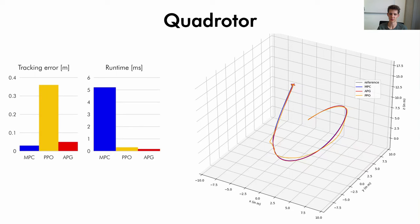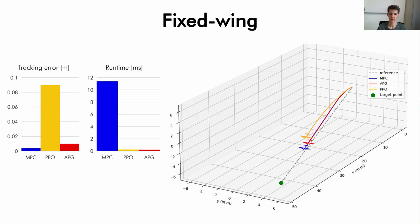We see a similar pattern also on the fixed wing, where APG achieves similar tracking errors to MPC, while resulting in more than an order of magnitude lower computation time.